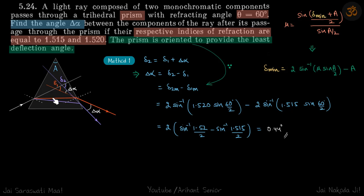So these two rays deflect at different angles, and let's say the difference in their deflection is delta alpha. So find that angle delta alpha between the components of rays after it passes through the prism, if their respective indices of refraction are this and this.